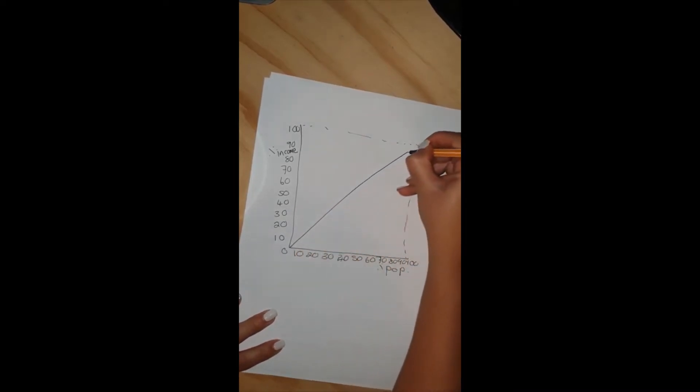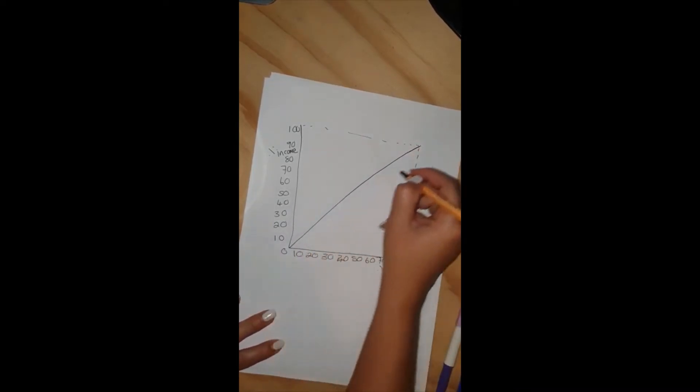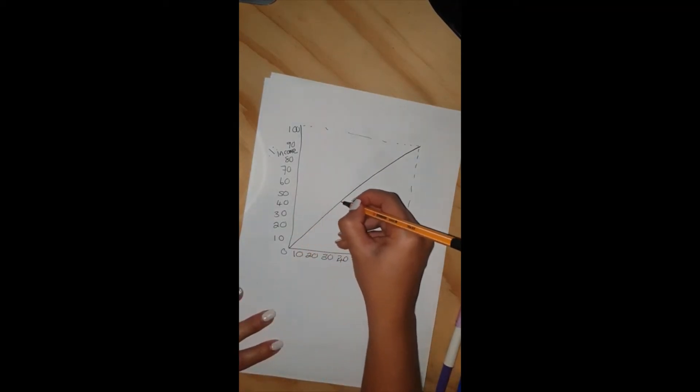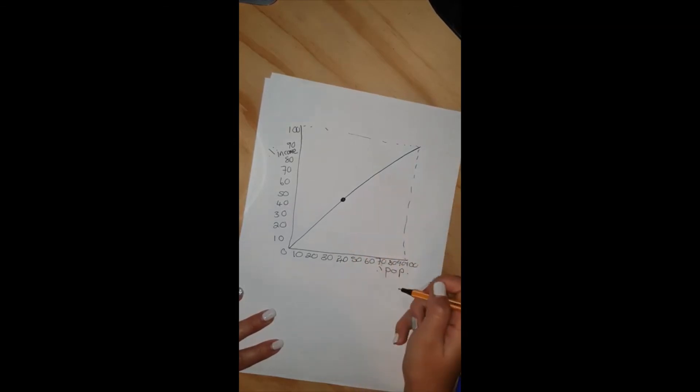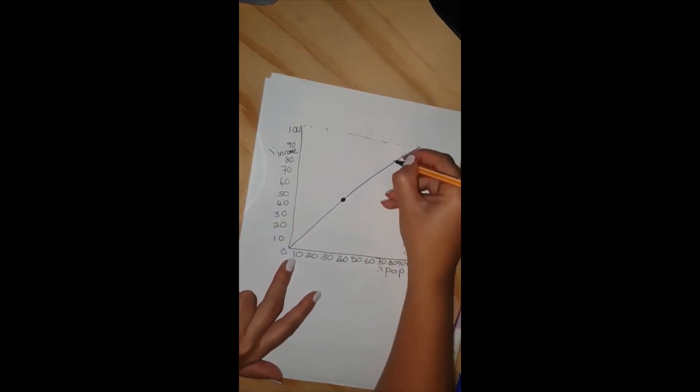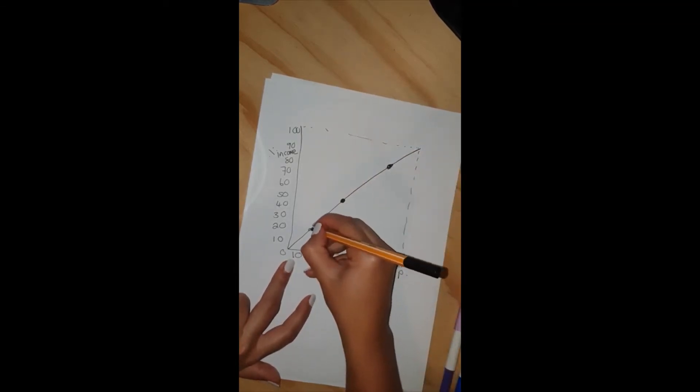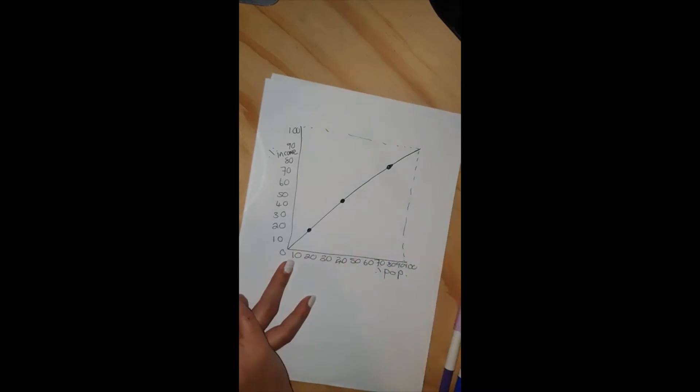You can draw a line here. This line represents perfect equality. This is where 50% of the population earns 50% of the income, 80% of the population earns 80% of the income, 20% of the population earns 20% of the income. This is the ideal. This never happens.